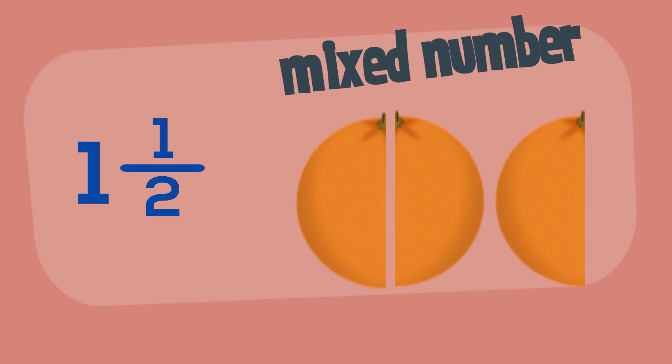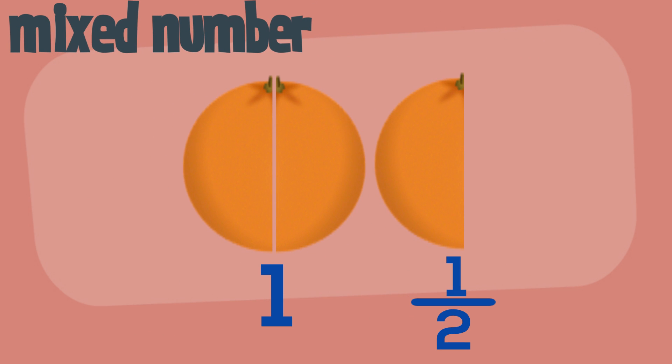This is a mixed number. It's called a mixed number because it's a mix of a whole number and a fraction. In this example, how many wholes do we have? One. How many extra halves do we have? One. The mixed number is one and a half.